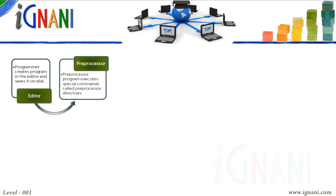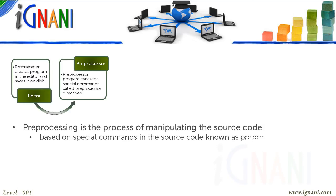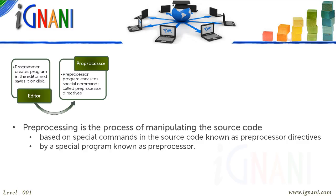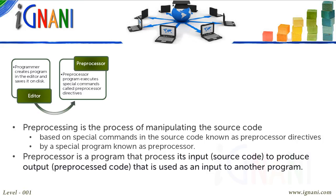Pre-processing: This is the first part of the build process. Pre-processing is the process of manipulating the source code based on special commands known as Pre-Processor Directives, by a special program known as the Pre-Processor. A Pre-Processor is a program that processes its input to produce output that is used as input to another program — which is the compiler in most cases.